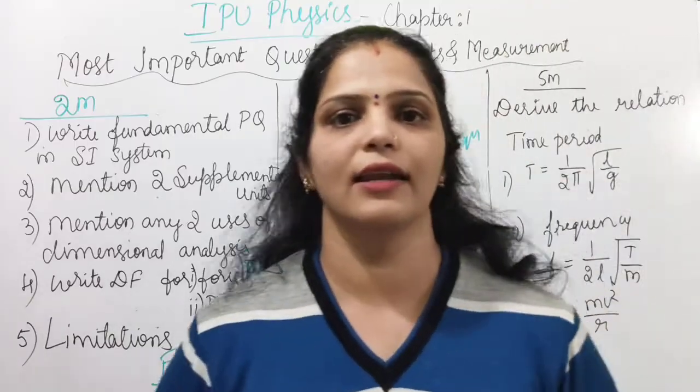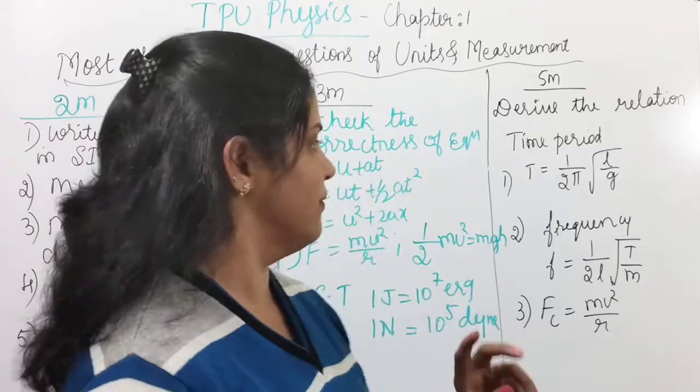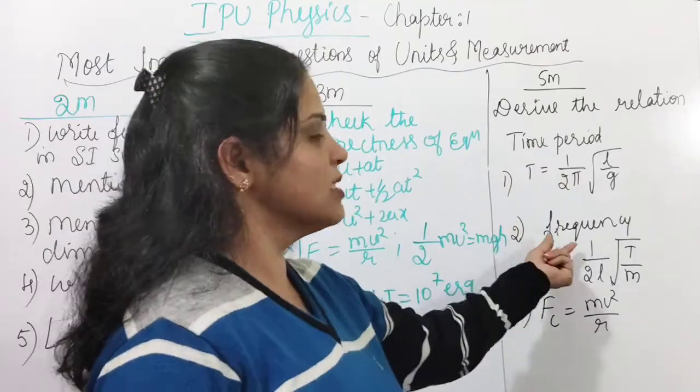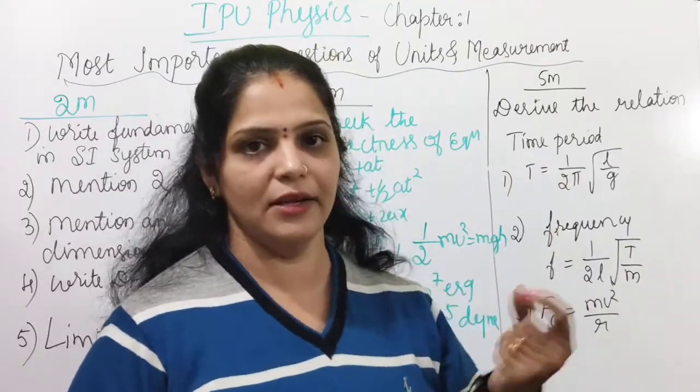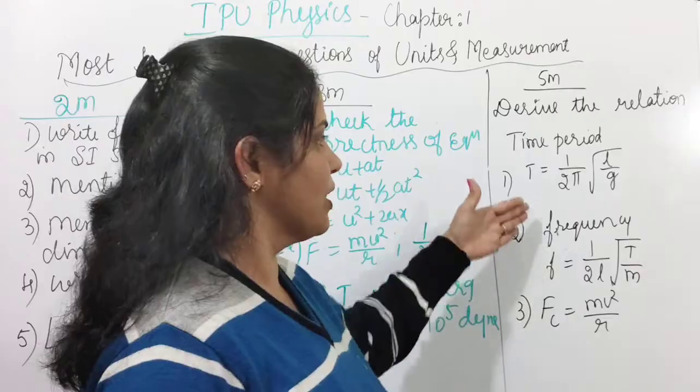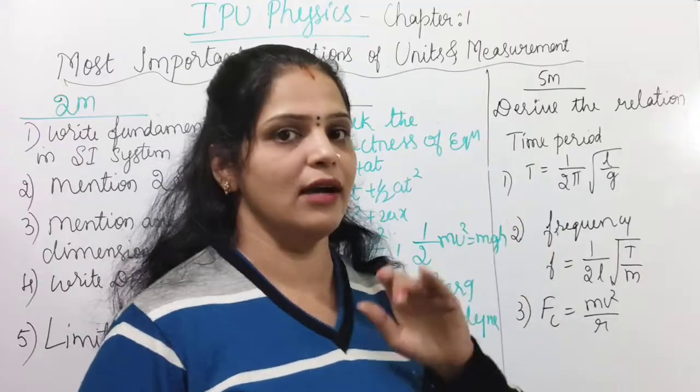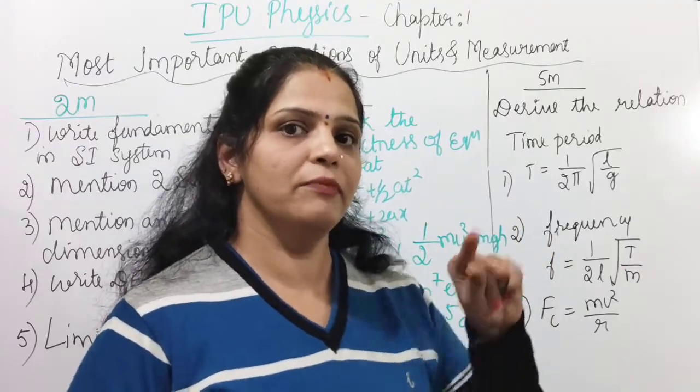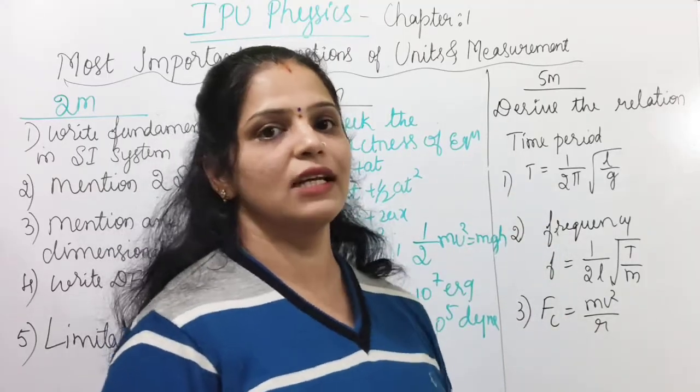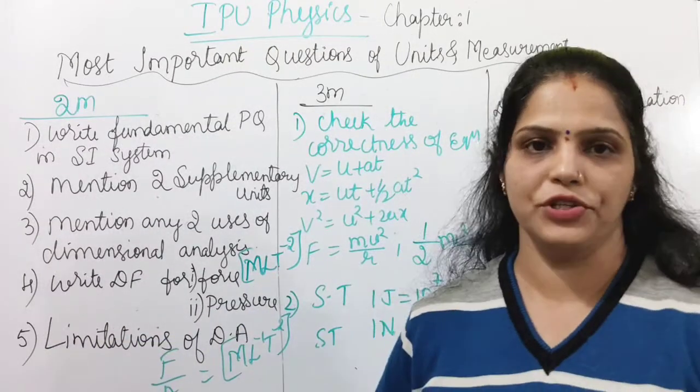And important five mark questions are derive the relationship among the physical quantities. The expected three derived relations are one is time period of simple pendulum. Another one is frequency of stretched string. Another one is centripetal force. Please go through that. All these are very important derivations. So sometimes this derivation is also asked for five marks. In numerical problem, this derivation may are added. This is asked for five marks. But most of the time, they'll ask a total of three marks or four marks question from this lesson.